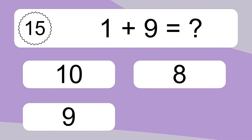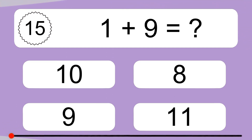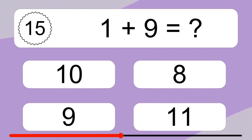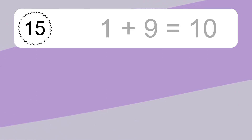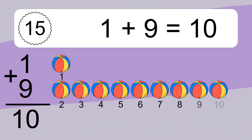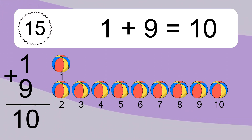1 plus 9 equals what? 1 plus 9 equals 10. Let's count it. 1, 2, 3, 4, 5, 6, 7, 8, 9, 10.